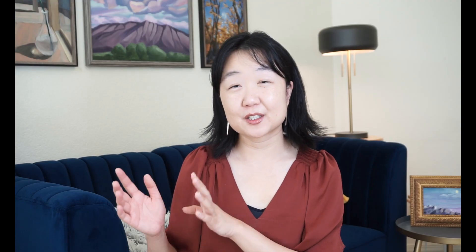In the picture on the right, I am showing a case where x has slightly higher merit than y, at 0.6. Similarly, when the proportion of social learners is under a critical threshold, the system will stay on the upper branch, meaning the majority will favor the high-merit option x. However, when this critical threshold is crossed, either the high or low merit option can prevail.